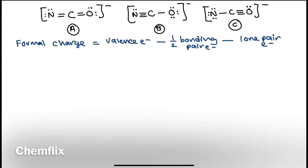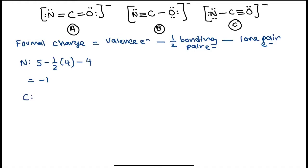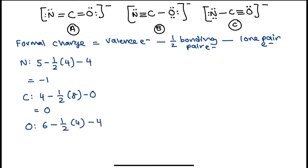For structure A, the formal charge on nitrogen would be 5 − ½(4) − 4 = −1. For carbon, it would be 4 − ½(8) − 0 = 0. For oxygen, it would be 6 − ½(4) − 4 = 0. So the formal charges for structure A are: N = −1, C = 0, O = 0.